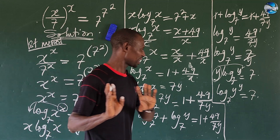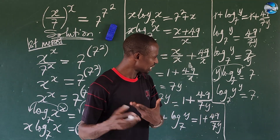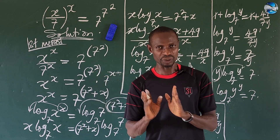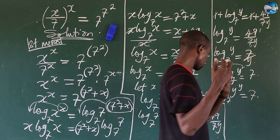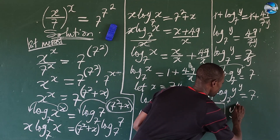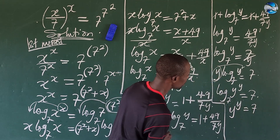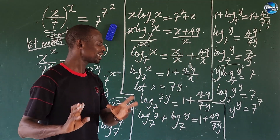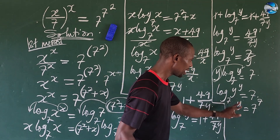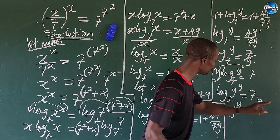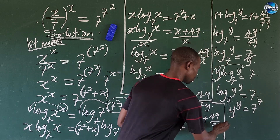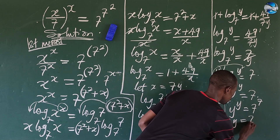Are we learning something here? Good. At this point, we succumb to the relationship between indices and logarithm — both of them have a very strong relationship. So we can rewrite this in index form. That is to say y to the power of y equal to 7 to the power of 7. We now have a very nice algebraic expression: y to the power of y equal to 7 to the power of 7. So that means y is equal to 7.